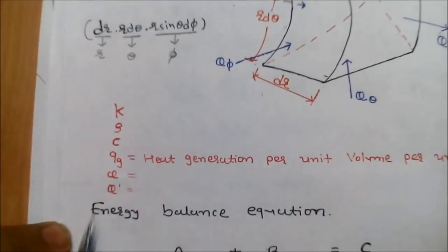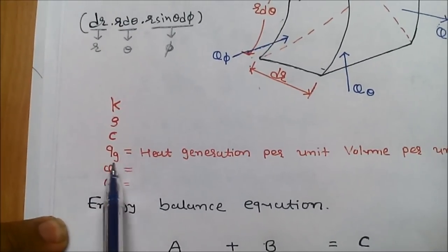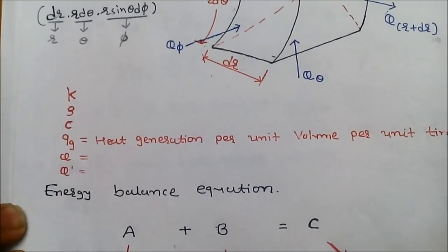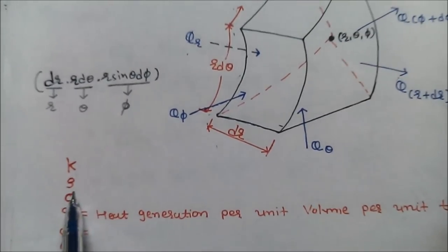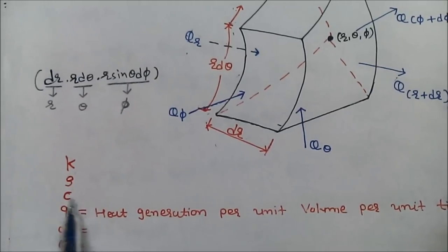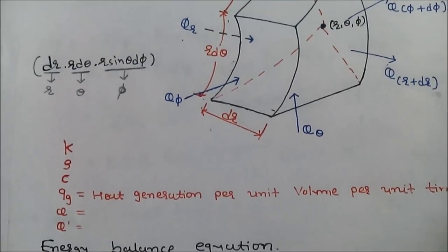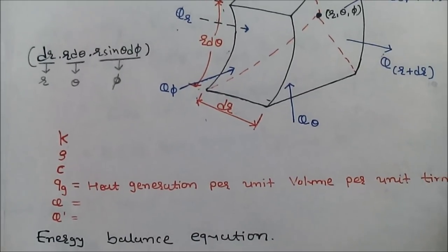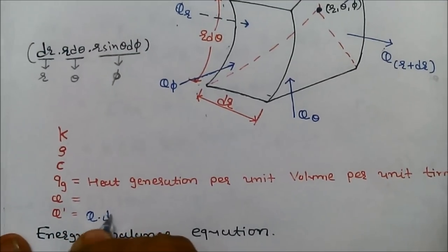We define the terms: k means thermal conductivity, rho means density, c means specific heat, qg means heat generation per unit volume per unit time, q means heat flow in that direction, and q' means total heat flow in time dτ, where q' is equal to q into dτ.